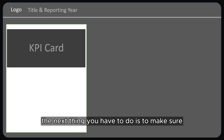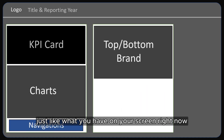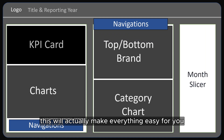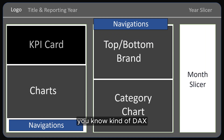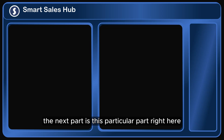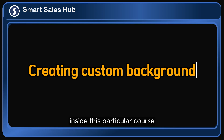After you might have read through the dashboard requirements, the next thing you have to do is to make sure you create a dashboard sketching, just like what you have on your screen right now. This will actually make everything easy for you. Once you get to Power BI, you know which particular kind of DAX you should use to pull the information out and the kind of chart you should use, and also how your layout would look like. The next part is where we are going to be creating a background for our dashboard, and we're going to be creating a lot of it inside this particular course. It will show you how to create very beautiful dashboards.